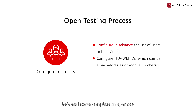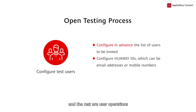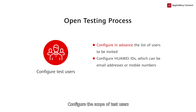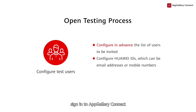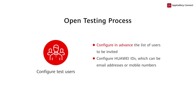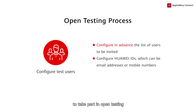Next, let's see how to complete an open test, which involves four steps. Steps 1 and 2 are what you need to do, and the rest are user operations. Step 1: configure the scope of test users. To do this, sign in to AppGallery Connect, click Users & Permissions, and create a user scope based on the test list. You can invite users with Huawei IDs to take part in open testing by manually inputting the IDs or importing them in batches.